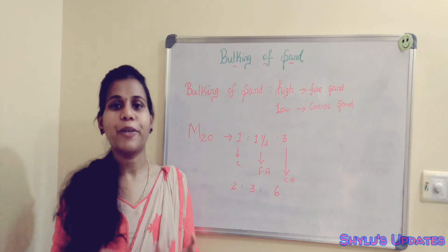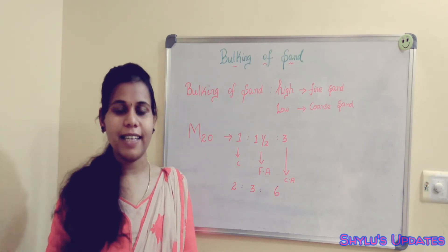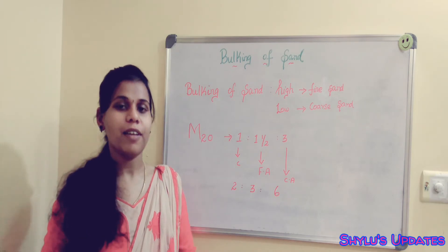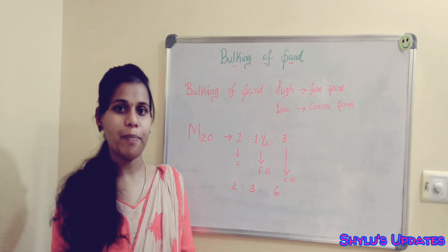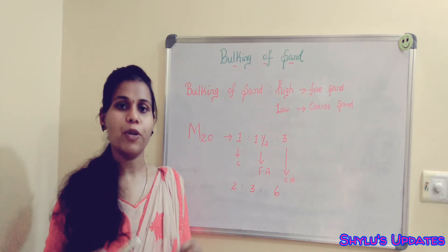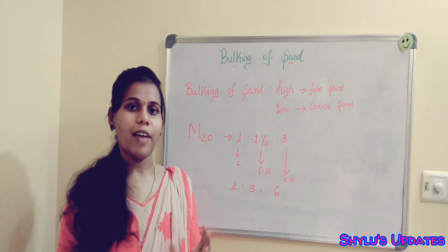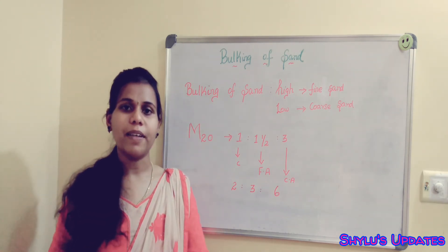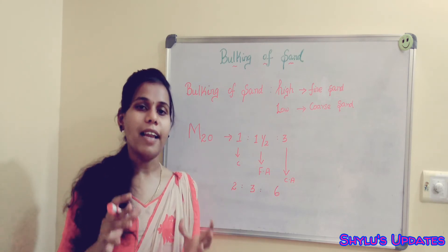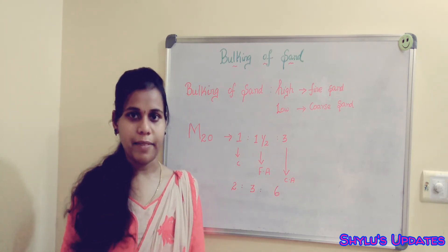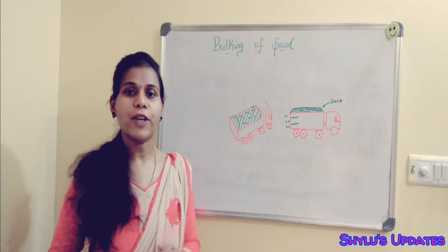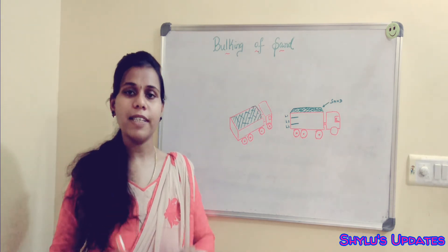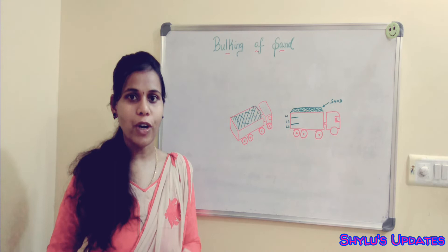Actually, where do we get sand for house construction? The source of sand is from the river bed. For house construction or any other construction, we get the sand from the river bed. When we bring it to the site and dump it, the moisture content is already present in that soil. The surface tension around the soil particles holds the moisture content, which is the reason for the increase in volume of sand.